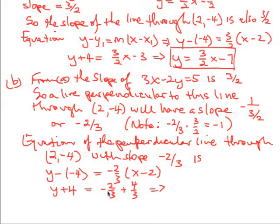So that implies, this implies y equals negative 2/3x plus 4/3 minus 4. Now, 4 of course is equal to 12/3.